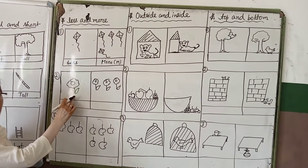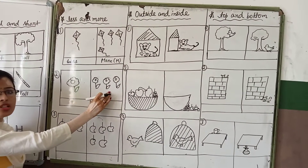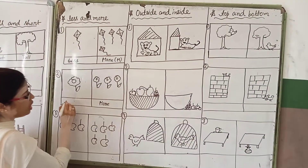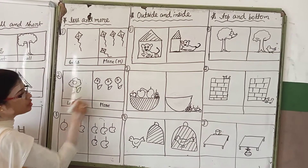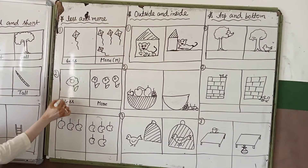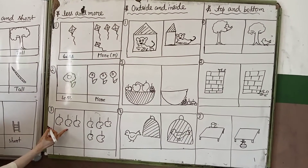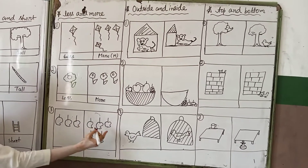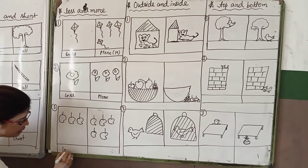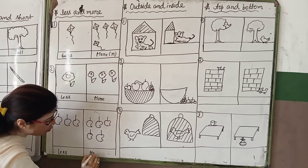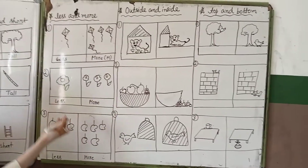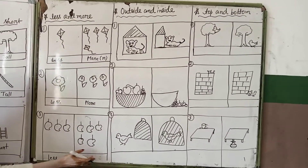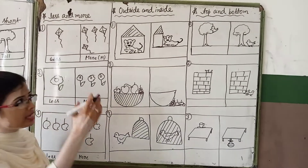One more example: one flower and three flowers. Three flowers means more in number — you can write here more. And one flower means less, lesser than three flowers, so write here less. Second example: three mangoes and five mangoes — both are mangoes but three is less than five. So here less, and here more, because five mangoes are more than three mangoes. Here more number of mangoes, and here less number of mangoes.